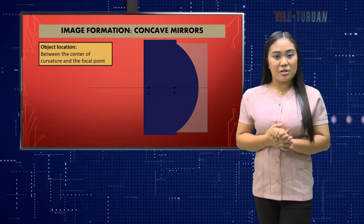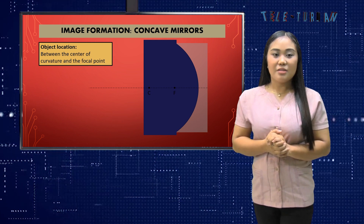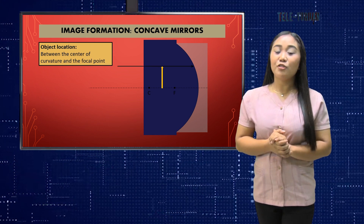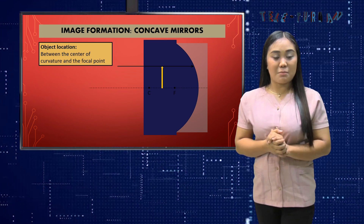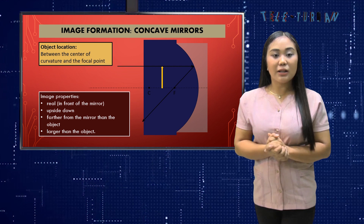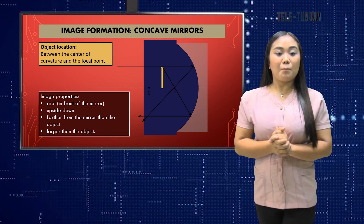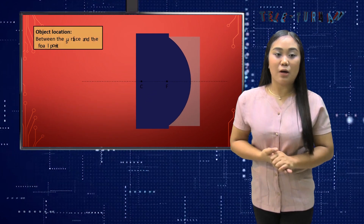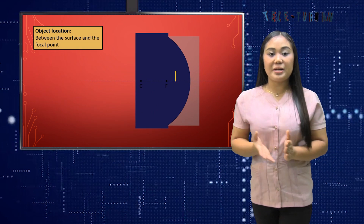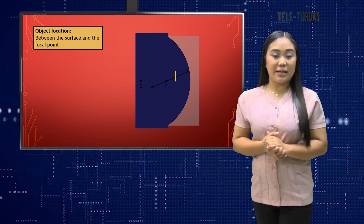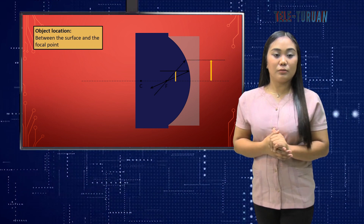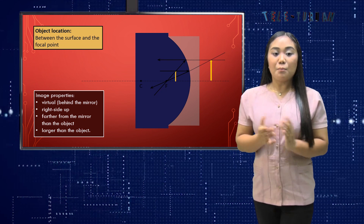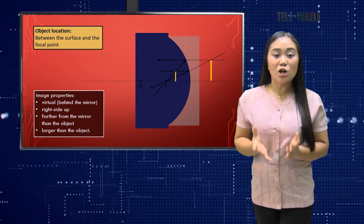Let's try to locate the image in concave mirrors. When the object is located between the center of curvature and the focal point, apply at least two rays in ray diagramming. The image properties are: real, in front of the mirror, upside down, farther from the mirror than the object, and larger than the object. When the object is located between the surface and the focal point, the image is virtual, right side up, farther from the mirror than the object, and larger than the object.